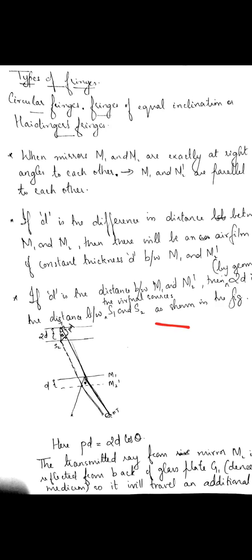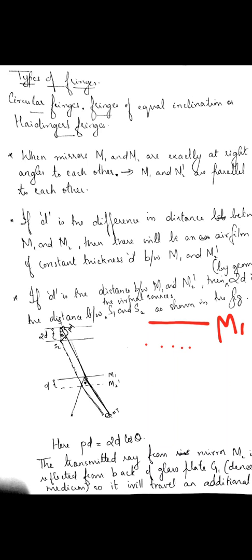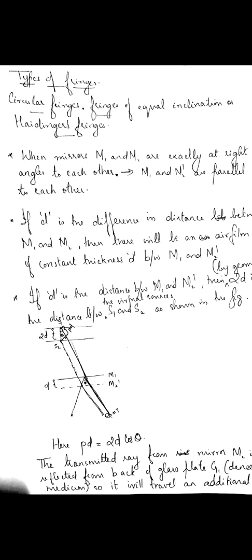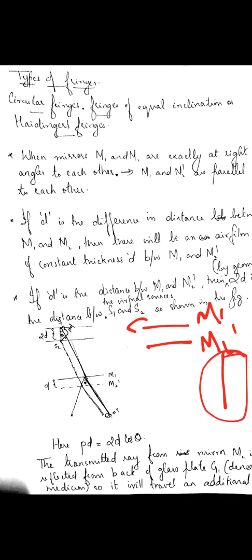For obtaining circular fringes, the two mirrors must be exactly perpendicular to each other. When they are exactly perpendicular, the mirror M1 and the virtual image M2 dash of mirror M2 will be exactly parallel to each other.